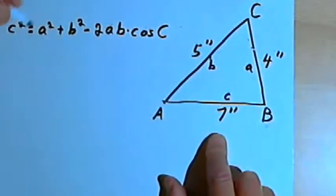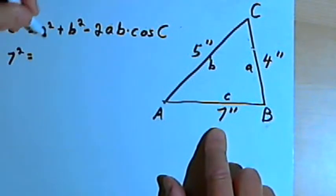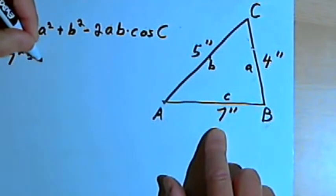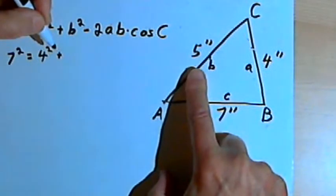And we'll fill in the numbers. So c is 7, I want 7-squared equals a-squared, a is 4, so that's 4-squared, plus b-squared, b was 5, so that's 5-squared.